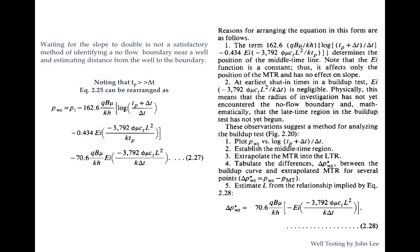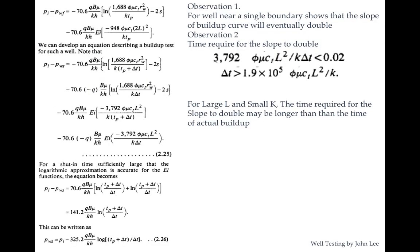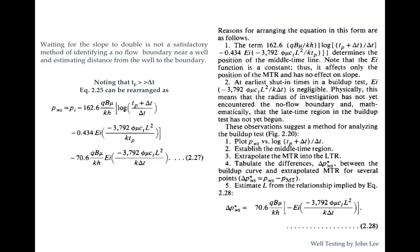There are two cases: if the boundary is nearby, we get slope doubling; if the boundary is far away and permeability is quite low, then running the buildup test for a longer shut-in period would be difficult. In that case, we use equation 2.28. Equation 2.28 is used when the well is quite far from the boundary or permeability is lower; otherwise a different equation applies, which will be shown during calculation.